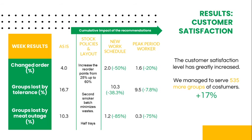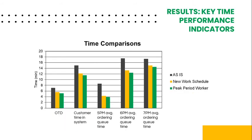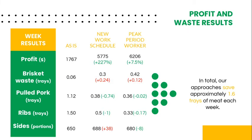The new stock, food production, and worker policies resulted in significant customer dissatisfaction improvement. We managed to decrease the change order percentage by more than half. The number of customers who have to leave the restaurant without food is less than 1%. In conclusion, we are able to save 535 more groups of customers. Concerning the key time performance indicators, we decreased the order to delivery time, customer timing system, and queue times during peak hours. Finally, the profit value grew by more than 227% compared with the current situation. Overall, our approaches save approximately 1.6% of meat each week. The waste of sides has increased, but it wouldn't be possible to achieve the previously stated levels of performance without this downside.